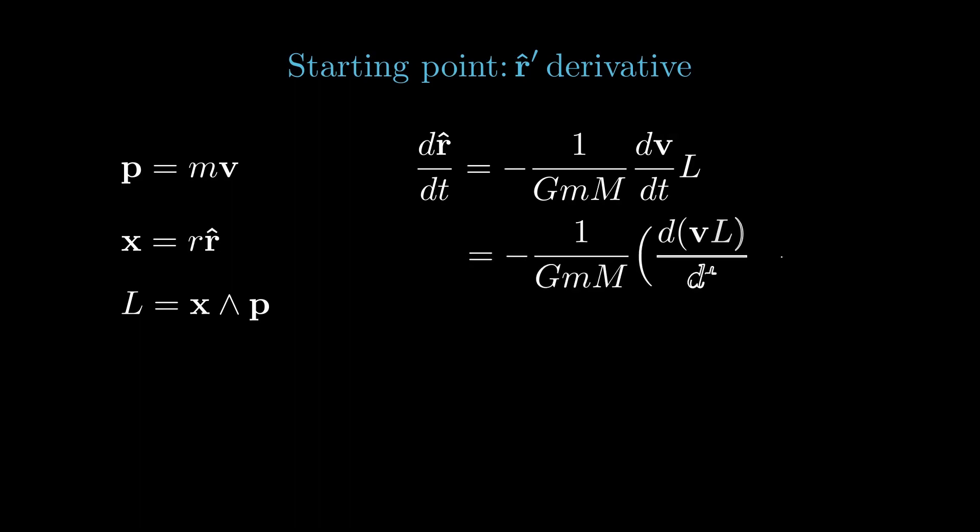We can now write dv dt times l as d dt of vl minus dl dt. Angular momentum is conserved for the system, which means that dl dt is zero. Justifying that properly is beyond the scope of this video.